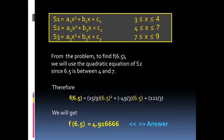This means that from the given data points, at x = 6.5, f(x) equals approximately 4.9167 (with a 7 at the end). That ends the presentation. Thank you.